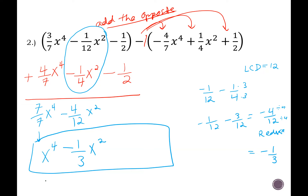For the last terms: negative 1/2 minus 1/2 — we already have a common denominator. Negative 1 minus 1 is negative 2, so we get negative 2/2 which is negative 1. Be careful: you might think those would cancel to zero, but it's negative plus negative, so the result is negative 1. Final answer: x to the 4th minus 1/3 x squared minus 1.